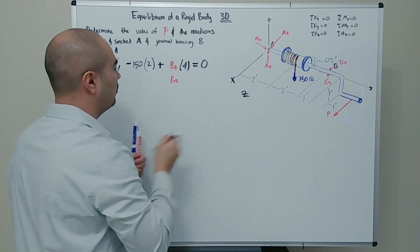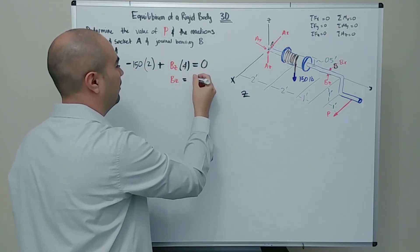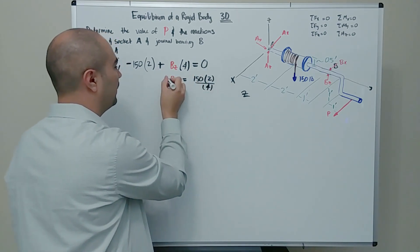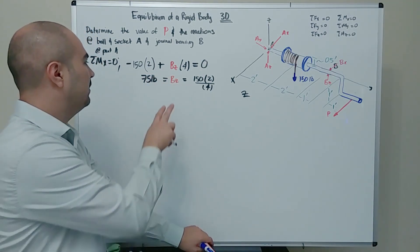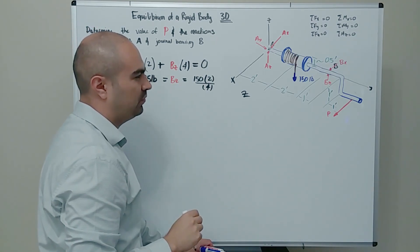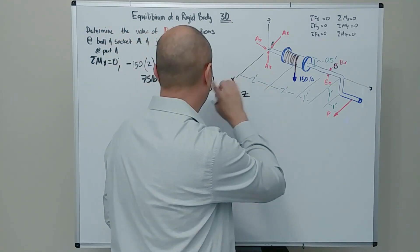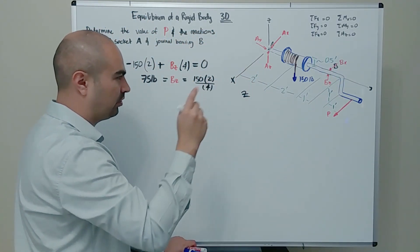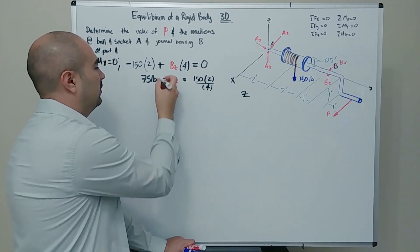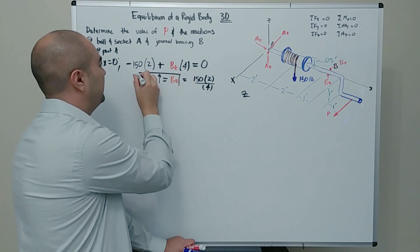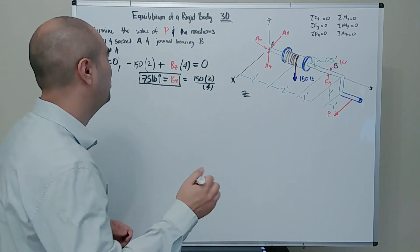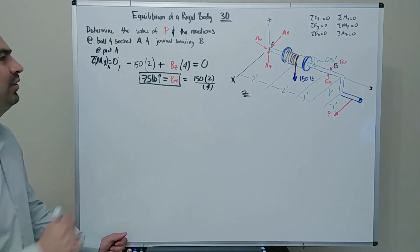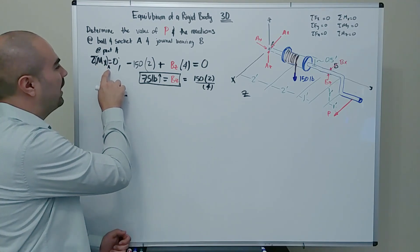Solving: Bz = 150×2 / 4 = 75 pounds. The positive result confirms that the assumed direction (upward) was correct. So Bz = 75 lb pointing up. Following the Hibbeler book notation, we denote this as the sum of moments about the X-axis at point A.